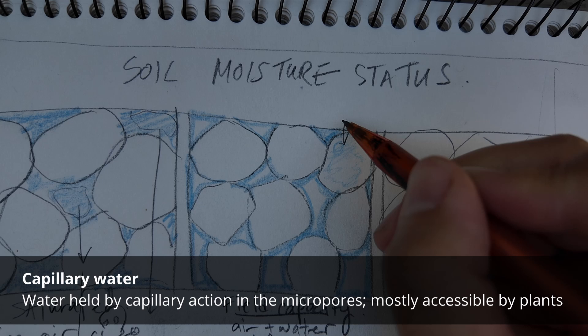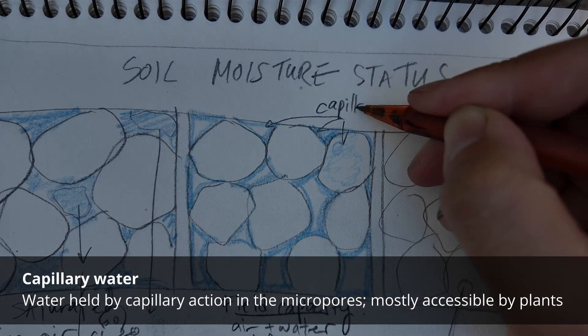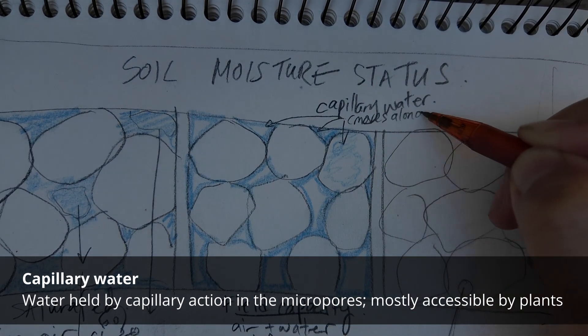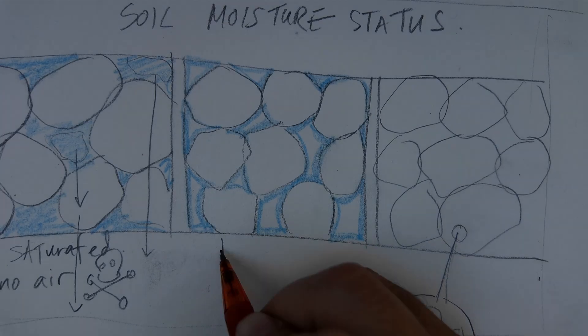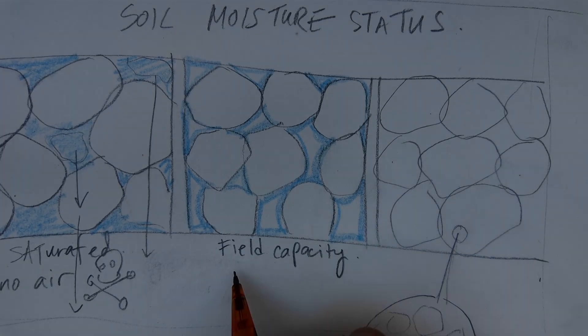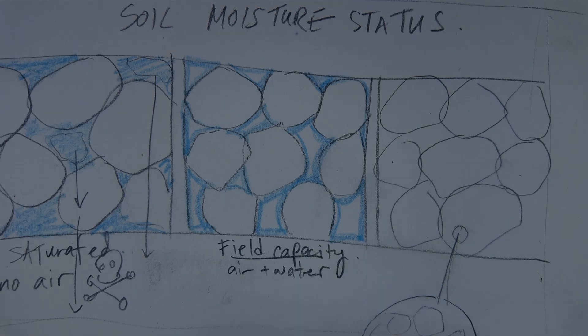That remaining water is called capillary water, which is water that's being held and that moves through these narrow spaces. This field capacity is a good moisture state for plants. There's both air and water.